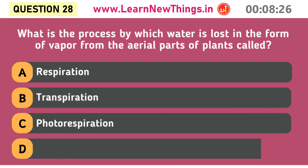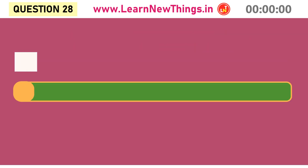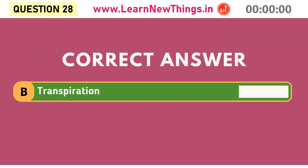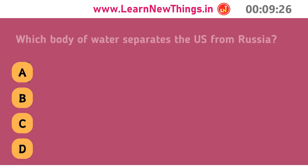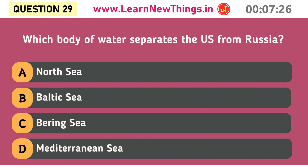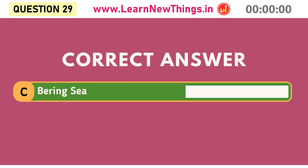What is the process by which water is lost in the form of vapour from the aerial parts of plants called? Transpiration. Which body of water separates the US from Russia? Bering Sea.